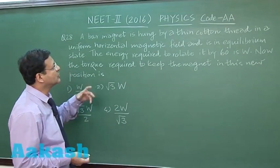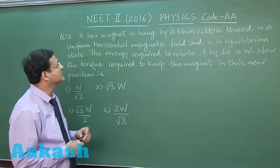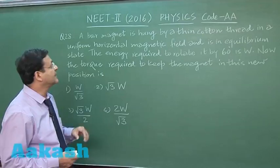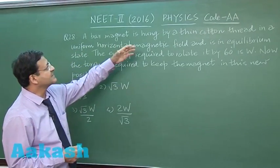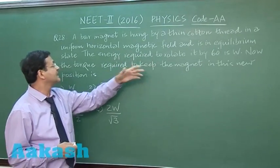Question 28 is based on bar magnet, a very standard and repeatedly asked question without even changing the data. A bar magnet is hung by a thin cotton thread in a uniform horizontal magnetic field and is in equilibrium.